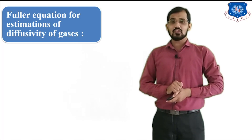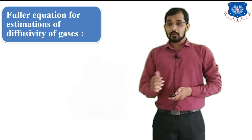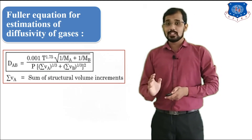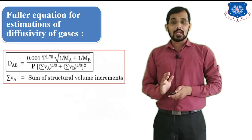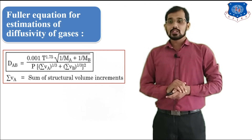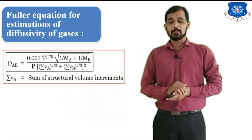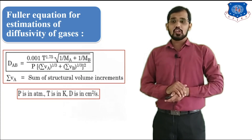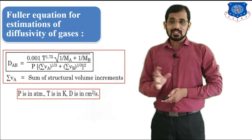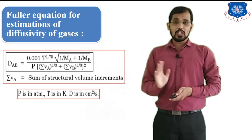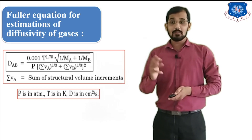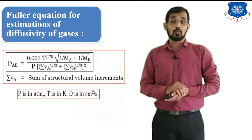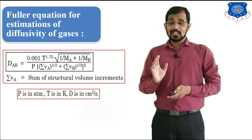The Fuller equation is also used for estimation of diffusivities of gases. According to the Fuller equation, DAB equals 0.001 × T^1.75 × √(1/MA + 1/MB) divided by [P × (ΣVA^(1/3) + ΣVB^(1/3))²]. Here, ΣVA is the sum of structural volume increments. P is in atmospheres, T is in Kelvin, and DAB is in cm²/s. MA and MB are molecular weights, and VA and VB are molecular volumes. Use these units while solving numericals.